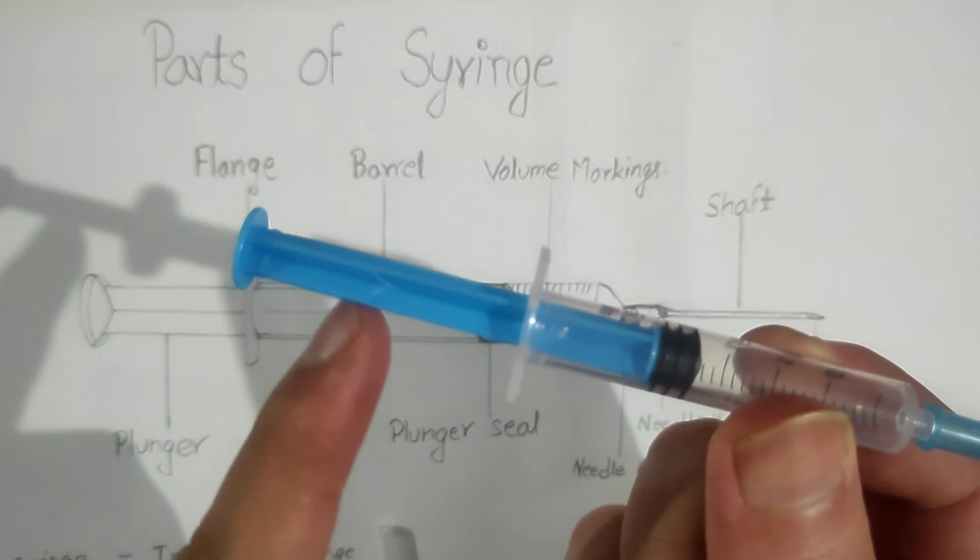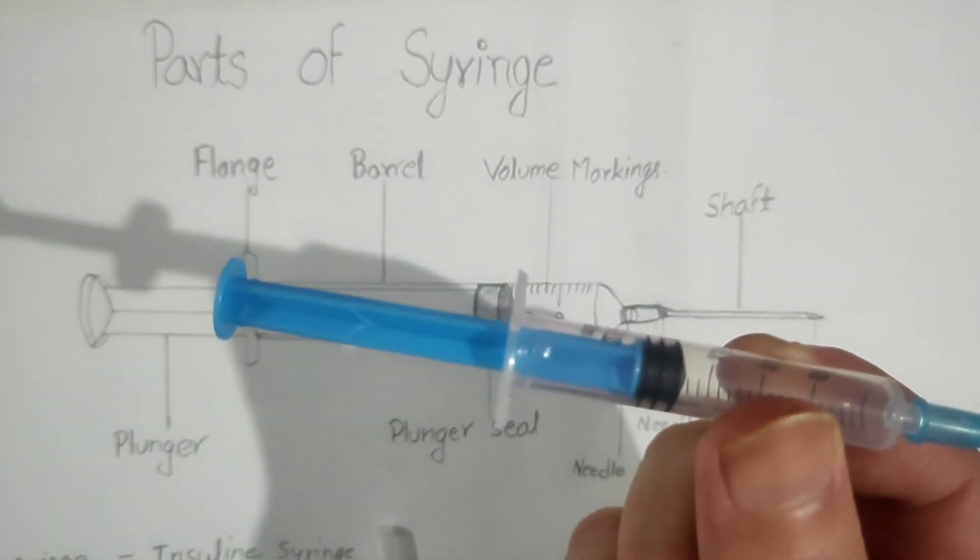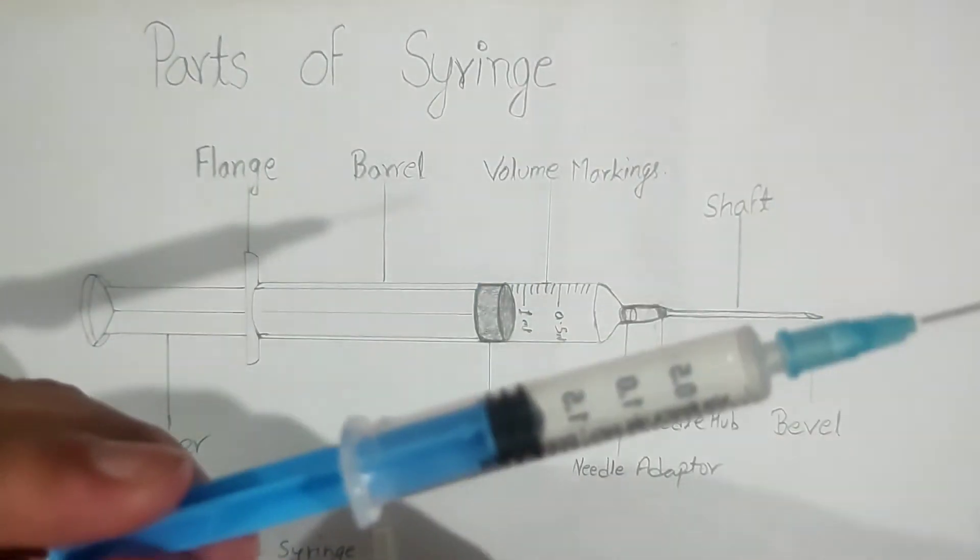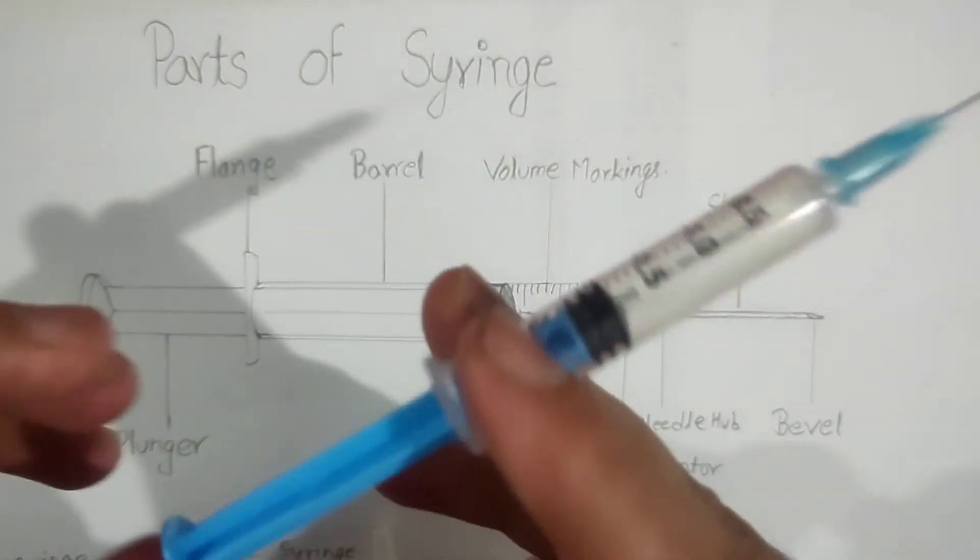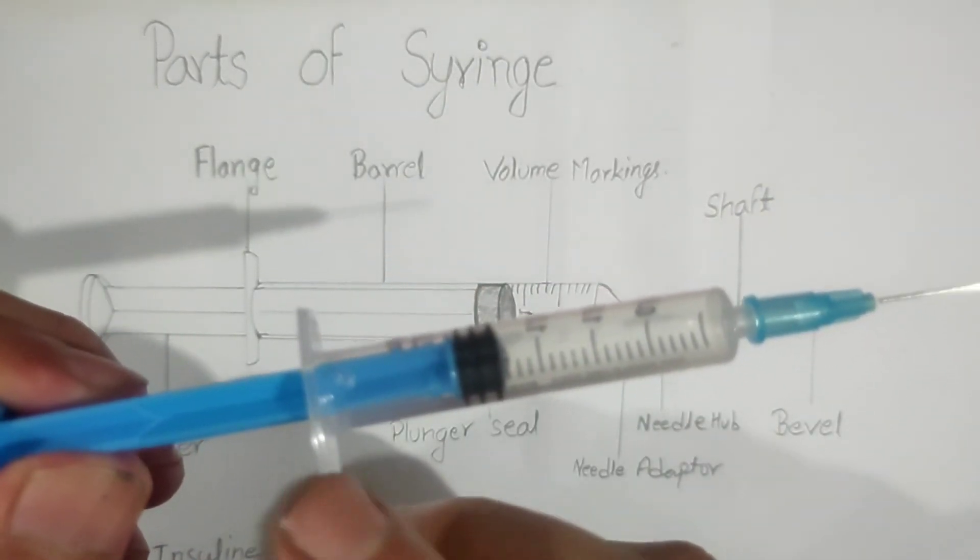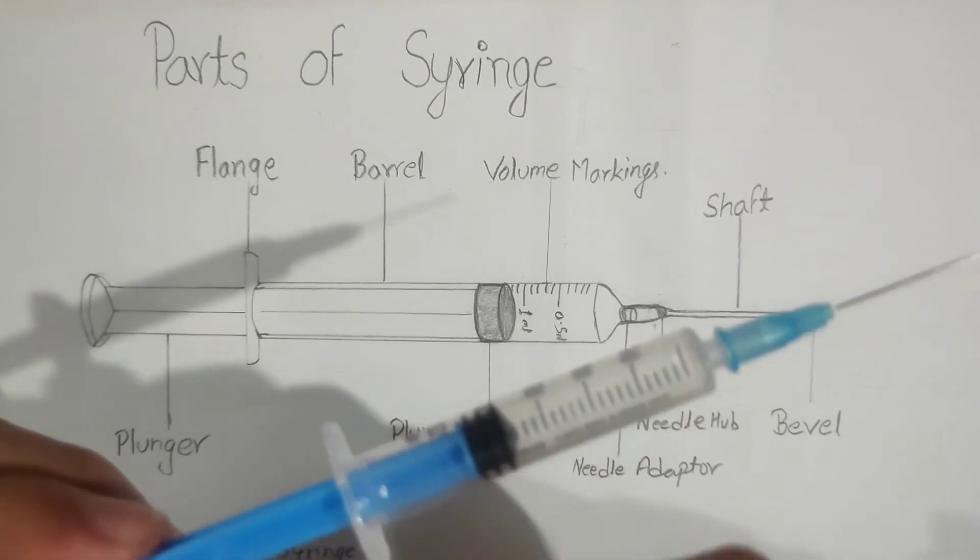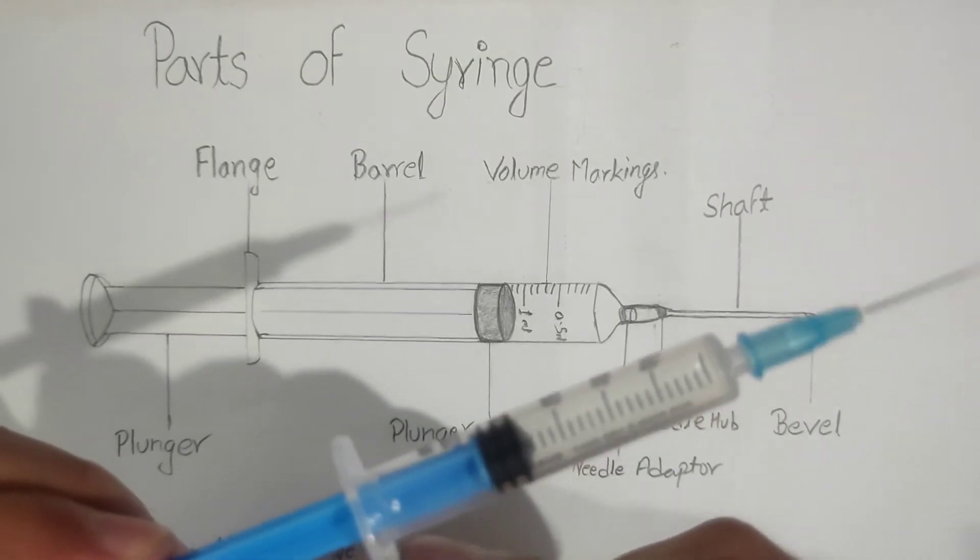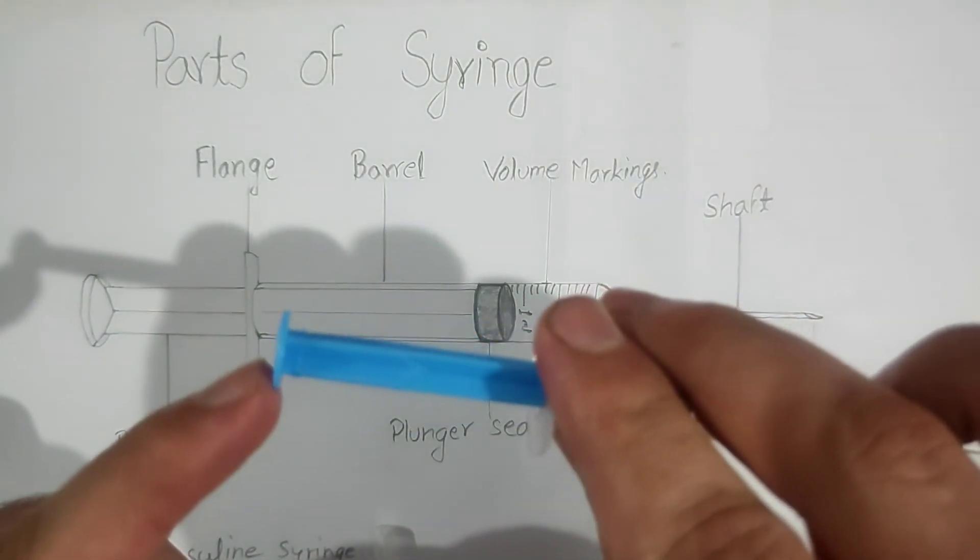This portion is known as the plunger, and this part which is used to hold it is known as the barrel flange. It is attached with the barrel, so it is known as the barrel flange.